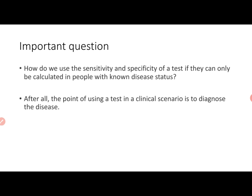The most important question remains: can we use the sensitivity and specificity of a test if they can only be calculated in people with known disease status — which is not our population? Our population is people with unknown disease status. So can we take these parameters and apply them in our clinical setting? Does it make sense to do that?